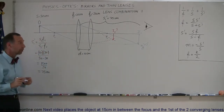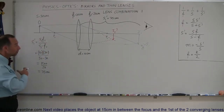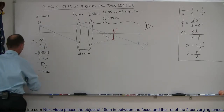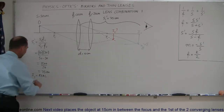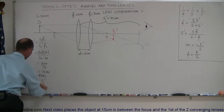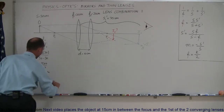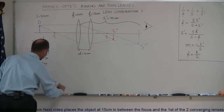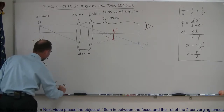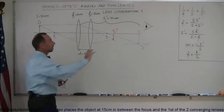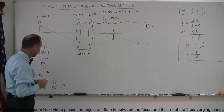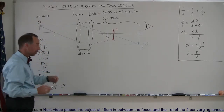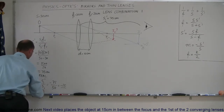The fact that this is a positive 75 centimeters means it's a real image forming to the right of the lens, so we can say image one is real. The magnification of image one, M1, is equal to minus S1 prime over S1, which is equal to minus 75 divided by positive 50, which equals minus 1.5. That means the size of the image is one and a half times the size of the object, and the negative means it's inverted — so the image is inverted.